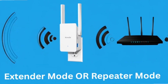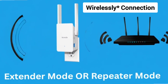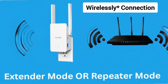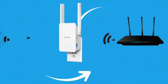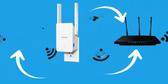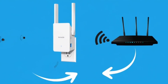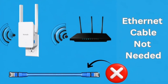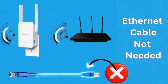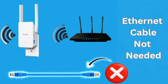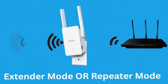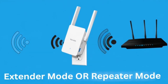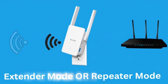Extender or repeater mode connects wirelessly to your router, then re-broadcasts that wireless signal to extend coverage. No Ethernet cable is needed in this setup, and it is called wireless repeater mode or range extender mode.